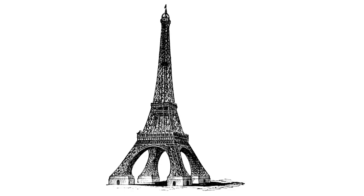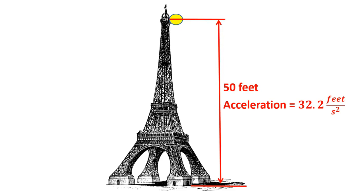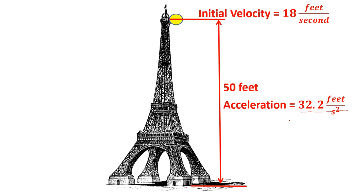Let's say we have a tower, and at the top of this tower we've got some big object — a big beach ball or some object — that we're going to throw out of the tower. We know the tower is 50 feet tall and our acceleration due to gravity is 32.2 feet per second squared, and when we throw this ball we give it an initial velocity of 18 feet per second. What we want to know is how long does it take and what is the final velocity just before it touches the ground.